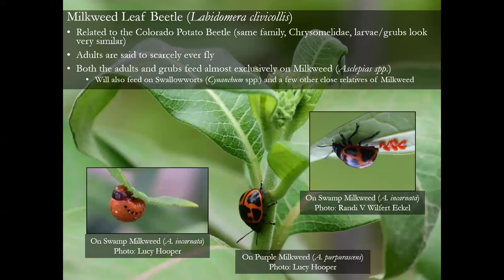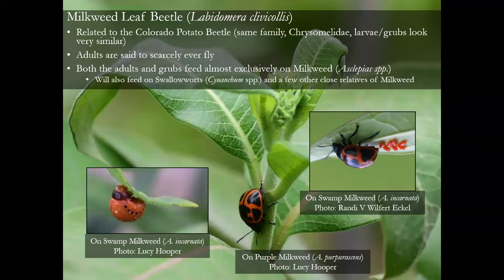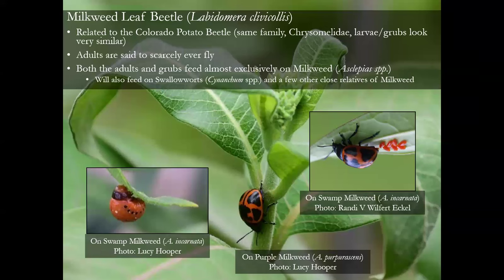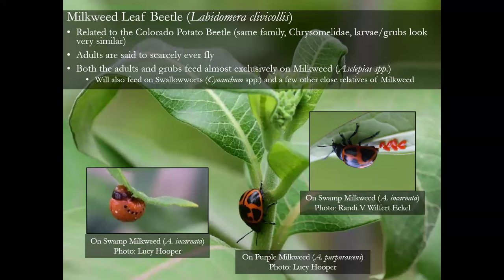Now we come back to the milkweed leaf beetle — the one from Lucy Hooper's first picture. This is a different picture, also from Lucy, on purple milkweed. I threw in a picture of them laying eggs, and the larvae look very closely related to Colorado potato beetle larvae — extremely similar. Both adults and grubs feed almost exclusively on milkweed and a few other closely related plants. I've never seen them fly, and doing research prior to this presentation, several people confirmed no one's really ever seen them fly — maybe hop a few inches. They sort of look like giant lady beetles.